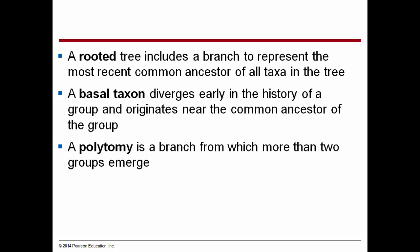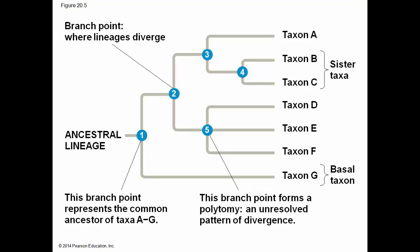A basal taxon diverges early in the history of the group and originates near the common ancestor of the group. A polytomy is a branch from which more than two groups emerge. Here is the ancestral lineage — that's the base of the first branch point, representing the common ancestor to taxa A through G. The branch point where lineages diverge shows the different taxa. Branch number five is a polytomy — an unresolved pattern of divergence. This means systematists are not yet certain of the relationships there, so instead of a dichotomy, it is a polytomy.